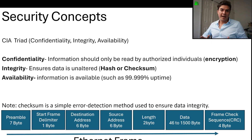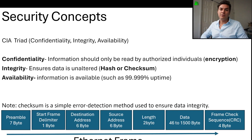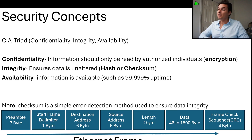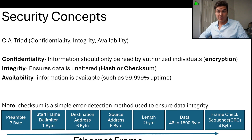The CIA triad is a security concept that all organizations should follow. The C stands for confidentiality, which means the information should only be read by authorized individuals. An example of how that can be achieved is through encryption.